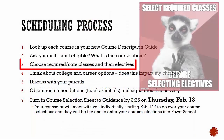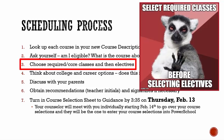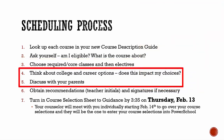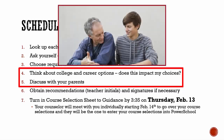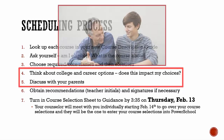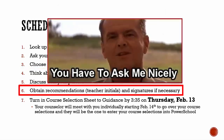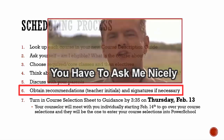Choose required classes first and then pick your elective classes. It is important to fill your schedule with courses you need to graduate, and then you can add in the electives you want. Think about college and career options and discuss class choices with your parents. You want to select courses that will prepare you for your future. Obtain the teacher initials recommendation if necessary — classes that need teacher initials will have an initial line beside them on the course selection sheet.